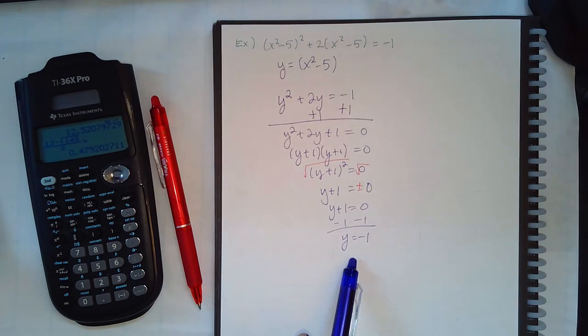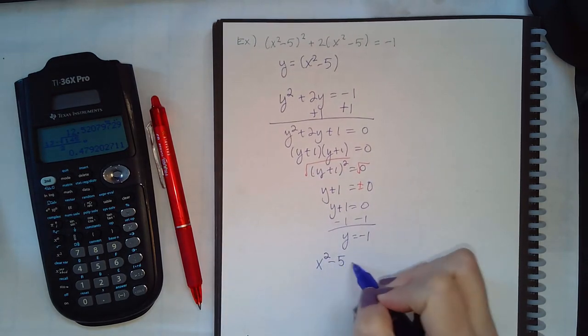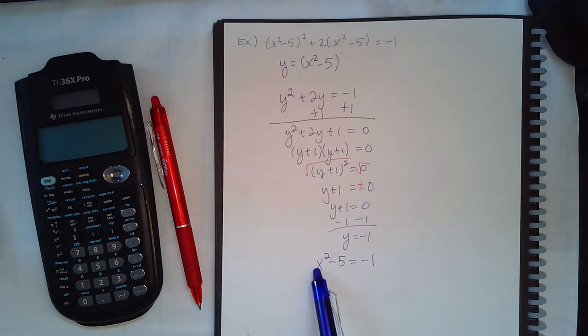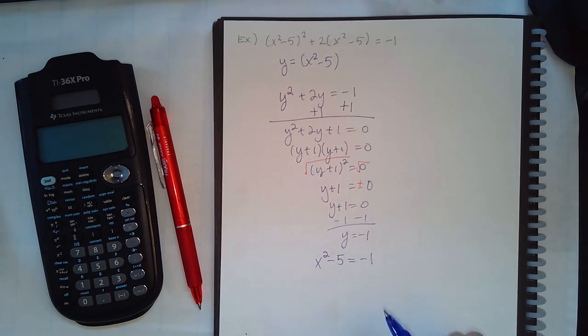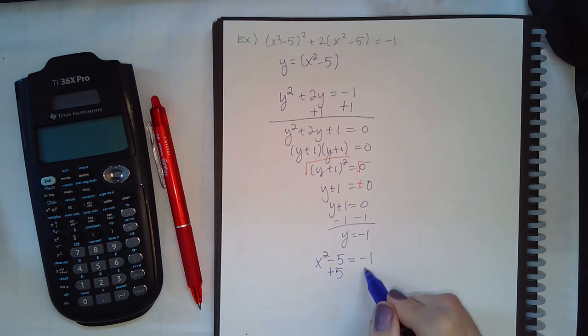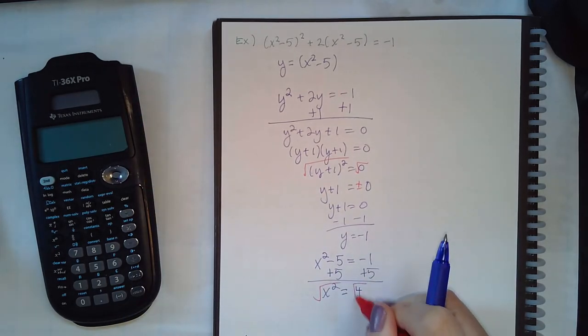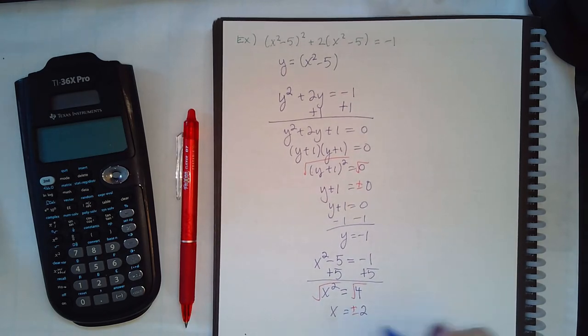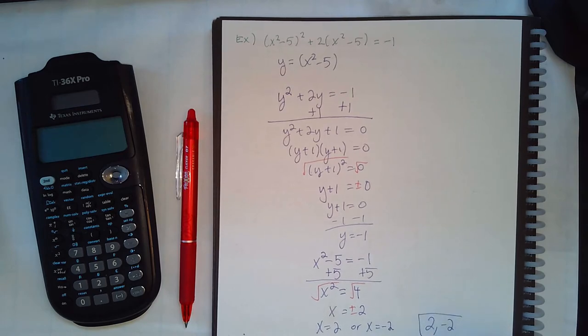Again, the original problem did not have y's in it. They had x's. So we have to go back and plug in what y represents. Now I still have a quadratic, but I don't have all three terms for a quadratic. I just have the squared term and then the constants. So you can solve this using square root property versus using the factoring method. So if I add 5 to both sides, I get 4. And then if I take the square root on both sides, we will get plus or minus. So we end up with x equal to 2 or x equal to negative 2. So in Alex, you separate your answers with a comma.